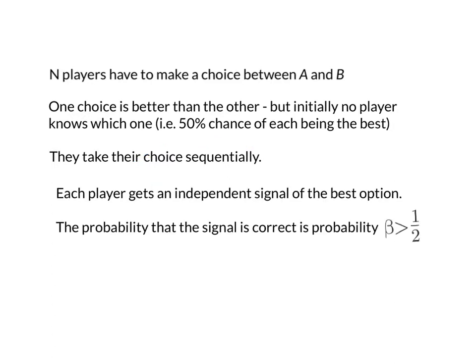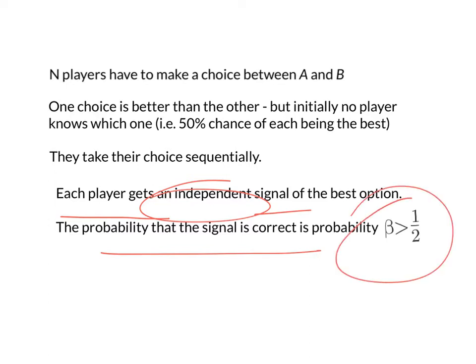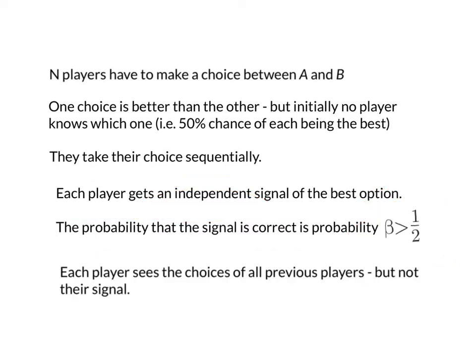To capture this idea of private information, we're going to say that each player gets an independent signal of the best option. The only problem is this signal may be incorrect. It's accurate in the sense that it's more likely to be correct than not — its probability of being correct is given by beta, which is greater than a half, but beta isn't equal to 1. So an individual player has their signal, which may be incorrect but is more likely to be correct than not, and they also get to see the choices of all previous players, but not the signals those players received.